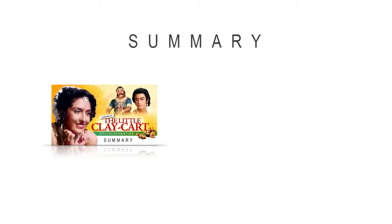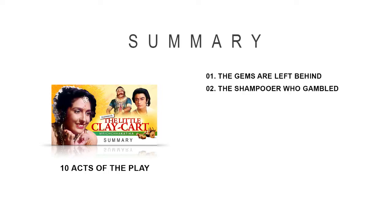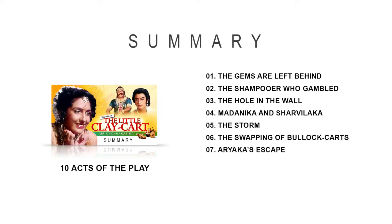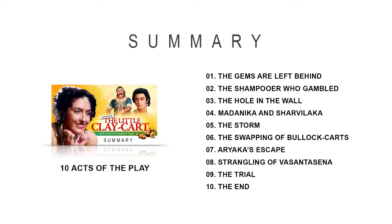The play is divided into 10 acts: 1. The Gems are Left Behind, 2. The Shampooer Who Gambled, 3. The Hole in the Wall, 4. Madhanika and Sharvilaka, 5. The Storm, 6. The Swapping of Bullock Carts, 7. Aryaka's Escape, 8. Strangling of Vasantsena, 9. The Trial, 10. The End. Now let's start with the act-wise summary.